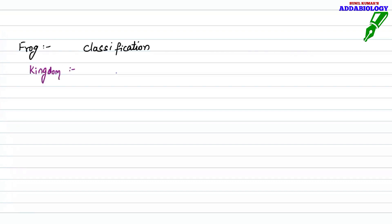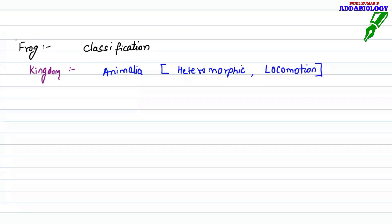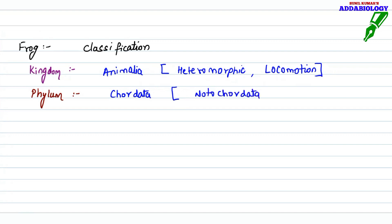Frog belongs to Kingdom Animalia — meaning the frog is heterotrophic and they show locomotion, they can move from one place to another. The next is Phylum: it belongs to Phylum Chordata, which means the embryo stage shows the presence of notochord. It also belongs to Vertebrata because it has a vertebral column.